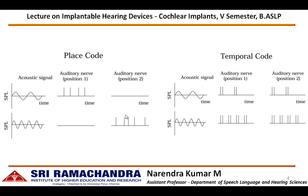In temporal coding, all the nerve fibers get activated for the incoming signal. If it is a low frequency signal, the number of cycles will be represented as the number of neural firings. So, there are two cycles in this image; hence, there will be two groups of nerve firings in the auditory nerve. That will be seen in all the auditory nerves, both at the apical end as well as the basal end. That is what the temporal theory describes.